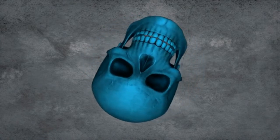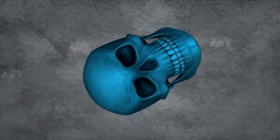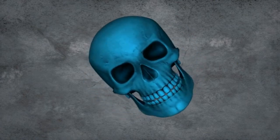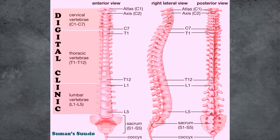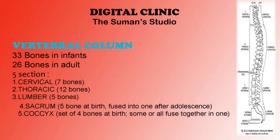After discussing the bones of the skull, now coming to the vertebral column or spine. In adults, there are 26 bones in the spine, whereas a child can have 33 bones. The 26 vertebrae comprise 7 cervical vertebrae, 12 thoracic vertebrae, 5 lumbar vertebrae, 1 sacral vertebra, and 1 coccygeal vertebra.